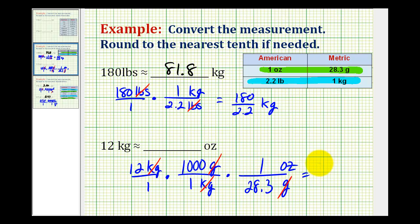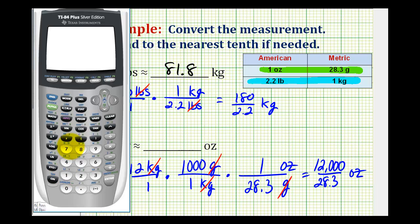So this will be 12,000 divided by 28.3, and this will be ounces. So our numerator is 12,000, and our denominator is 28.3. So rounding to the nearest tenth, this will be 424.0 ounces.